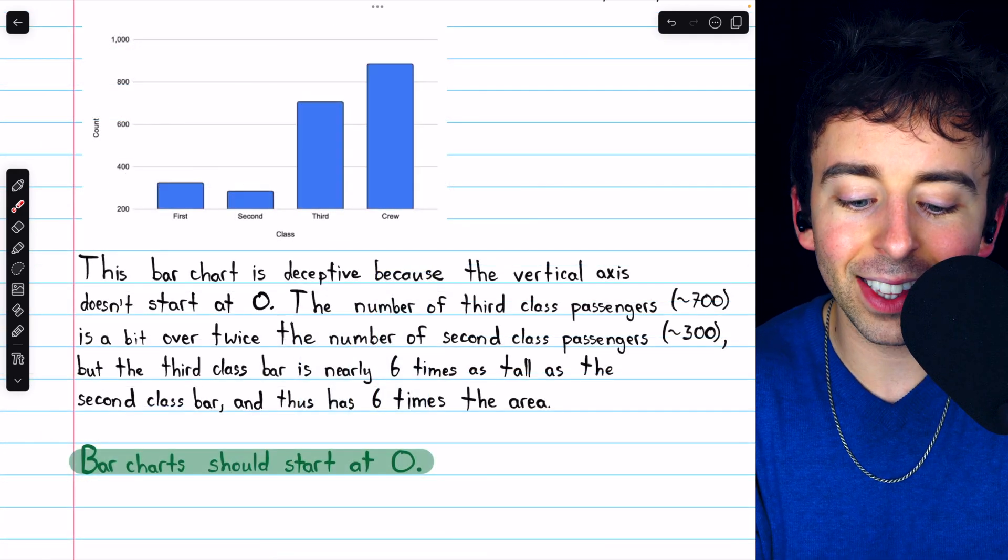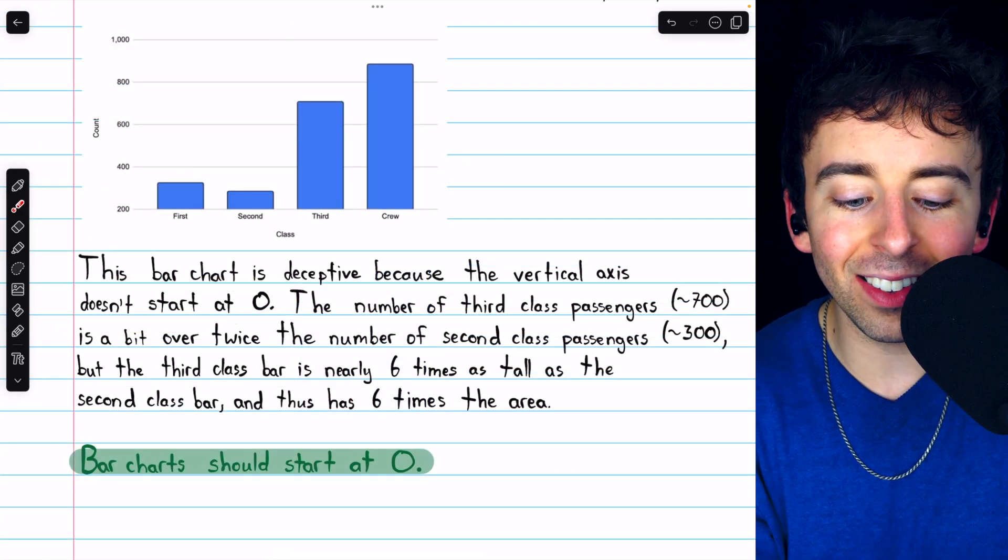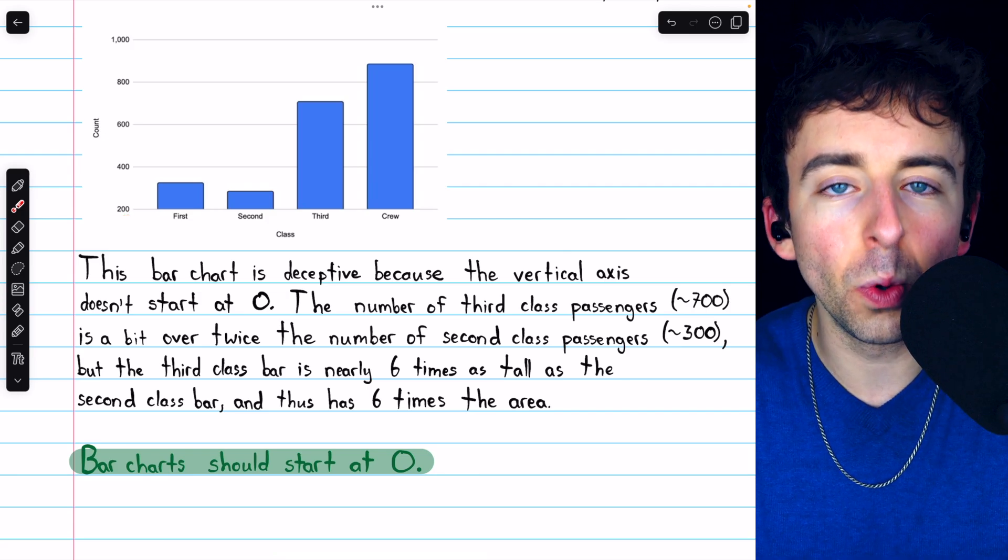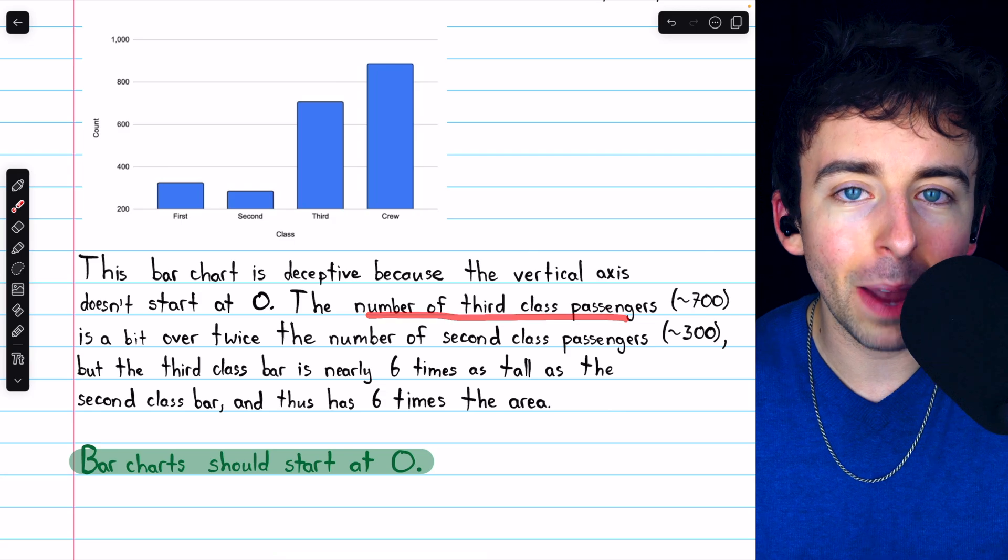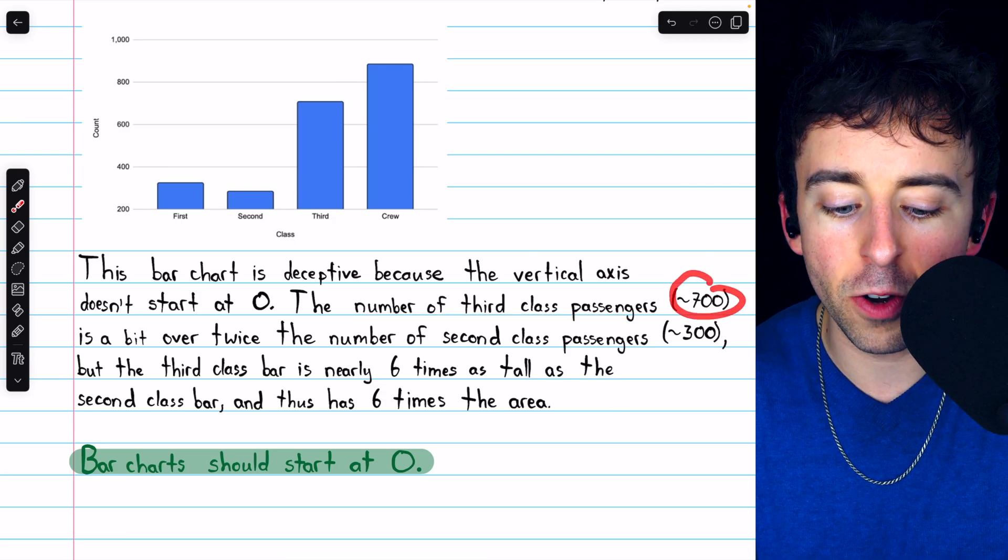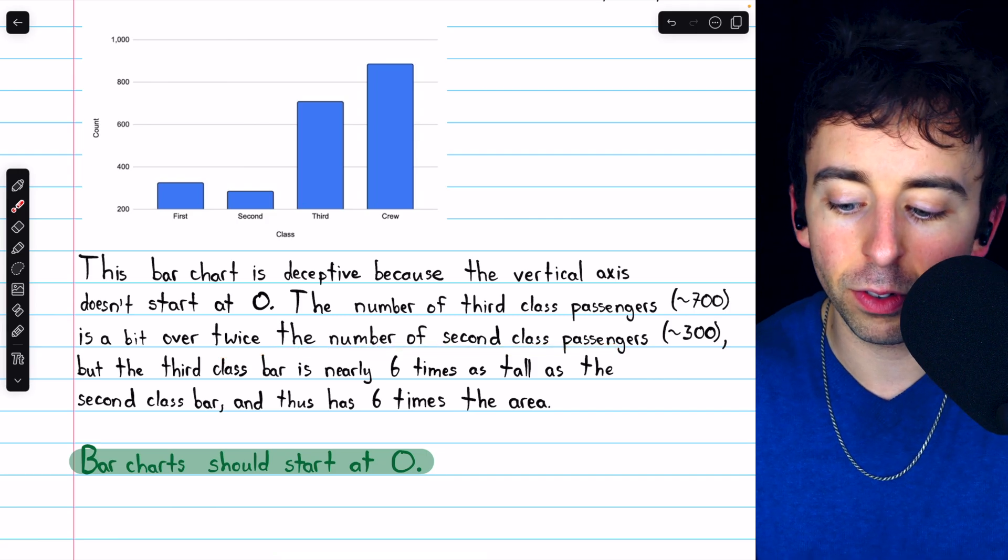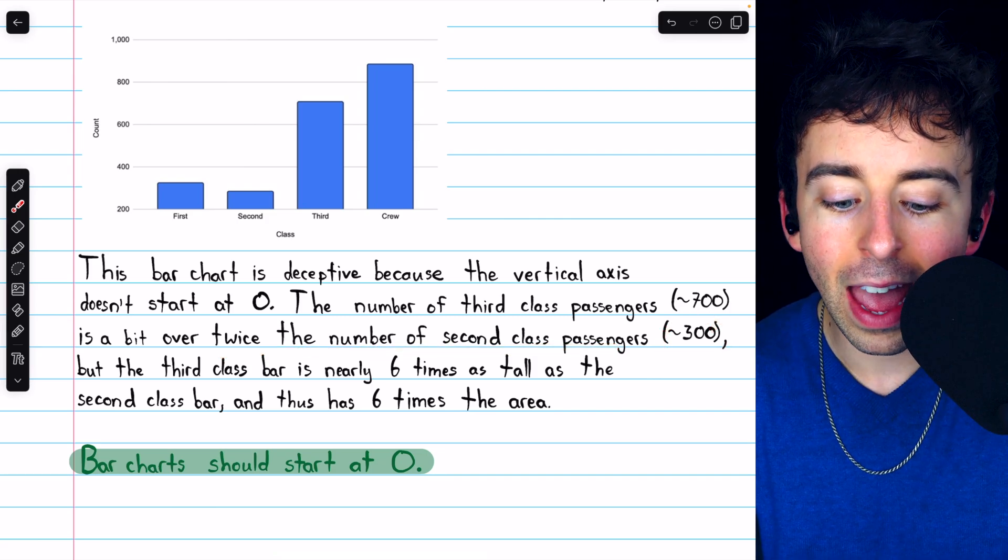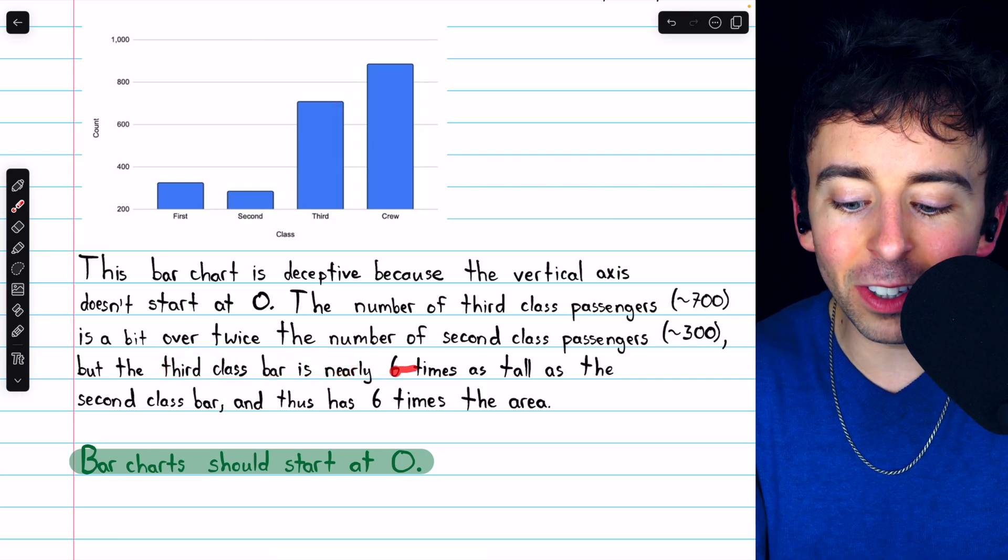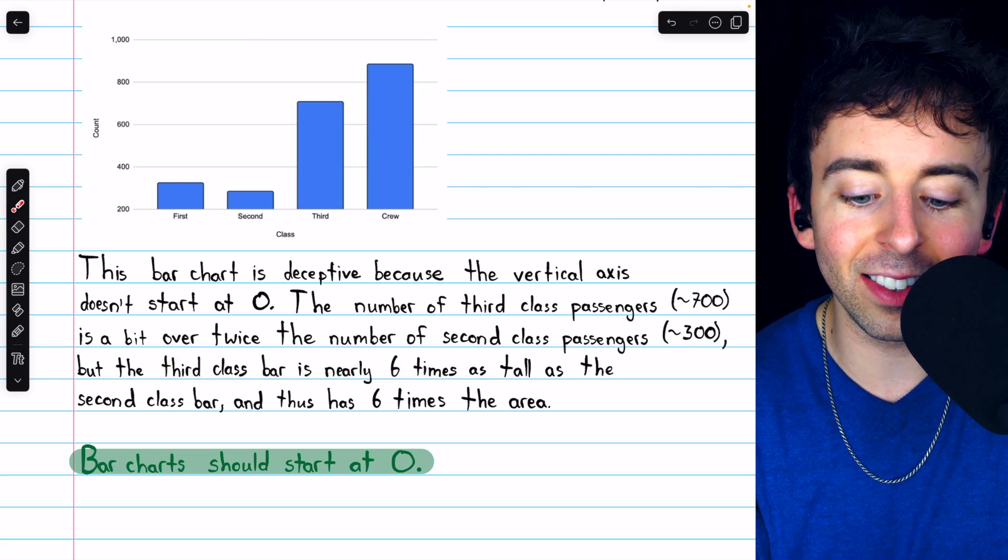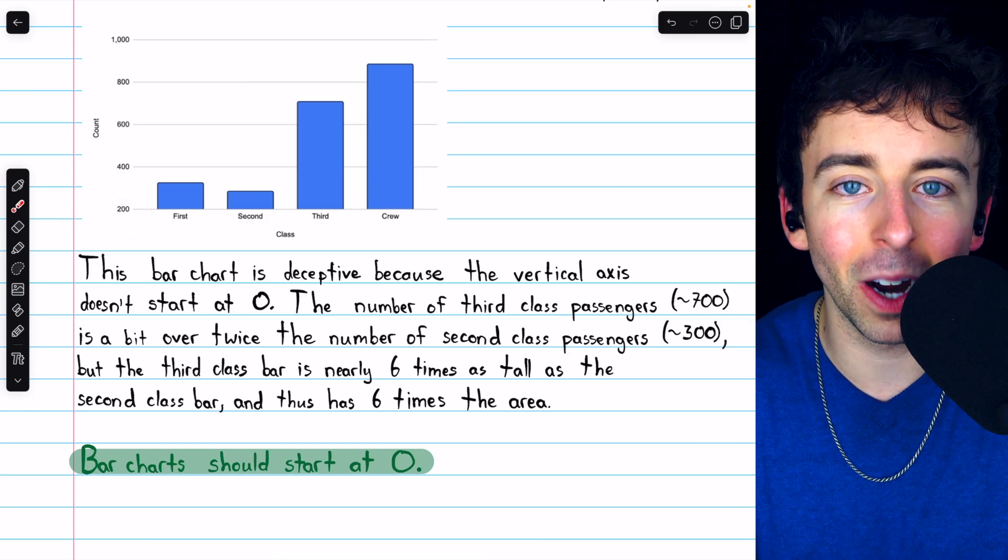Do you see what the problem is? It's the fact that this bar chart does not start at zero. You can see that it actually starts at 200. So, for example, the number of third class passengers, which is about 700, is a bit over twice the number of second class passengers, which is about 300. However, the third class bar we see up here is nearly six times as tall as the second class bar because the vertical axis is not starting at zero.